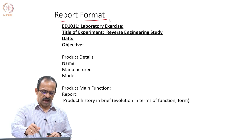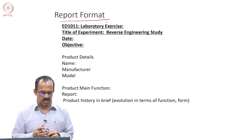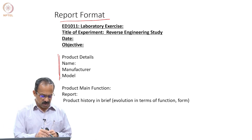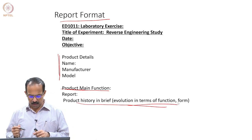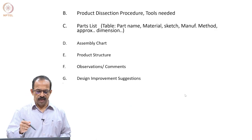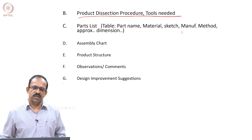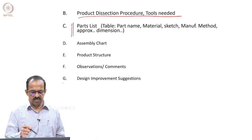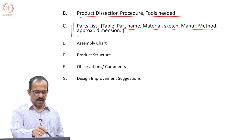The report format is the same as in the previous case. Write down the details of the product and its main function, then write a brief history of the product evolution in terms of function and form. Write down the procedure — what tools you used and how you did the dissection — then prepare a parts list containing part name, material, sketch, manufacturing methods, and approximate dimensions.